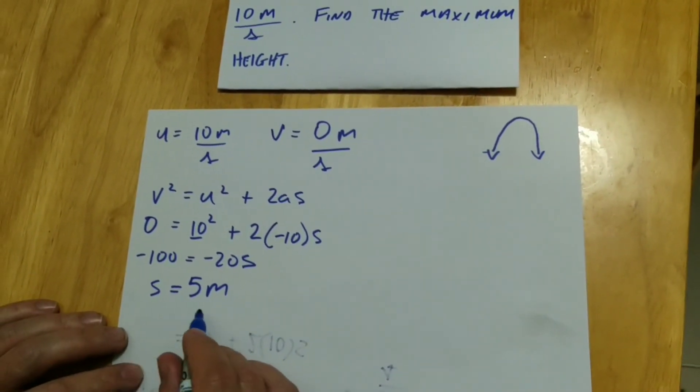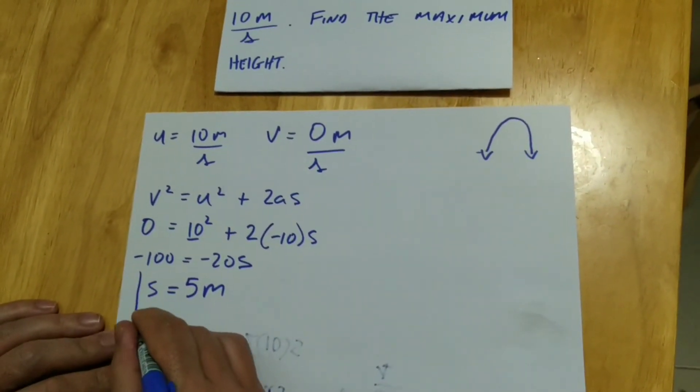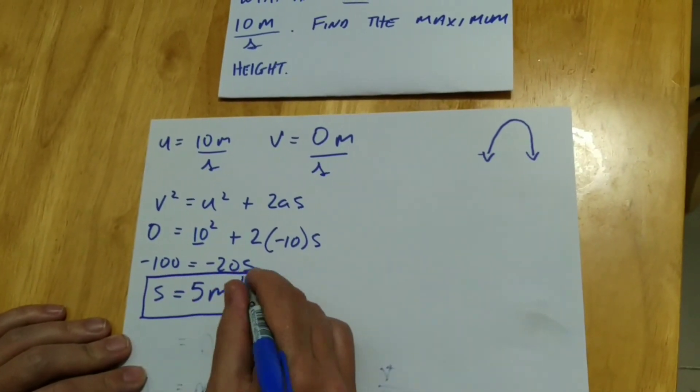So that means s is the maximum height. So the water projects upwards 5 meters.